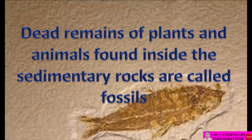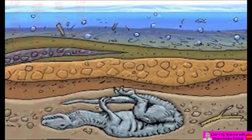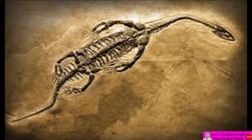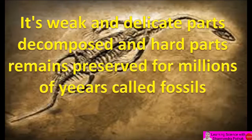Fossils. Dead remains of plants and animals found inside sedimentary rock are called fossils. When dead animals are deposited, erosion and deposition cause them to become trapped inside sedimentary rock. Their weak and delicate parts decompose, while hard parts remain preserved for millions of years — these are called fossils.